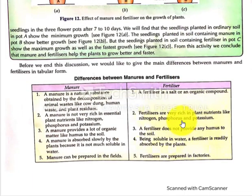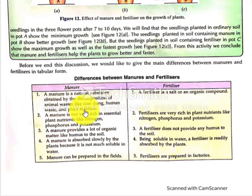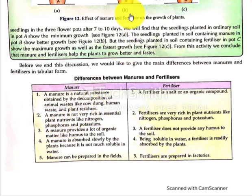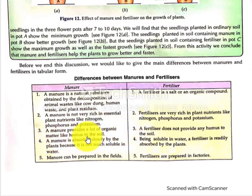Manure is a natural substance formed by the decomposition of animal waste and plant residues — like cow dung, human waste, and plant residues. Manure is not very rich in essential plant nutrients like nitrogen, phosphorus, and potassium, and the growth from manure is average. Manure provides a lot of organic matter like humus into the soil.